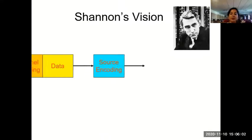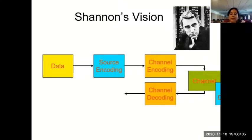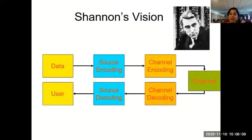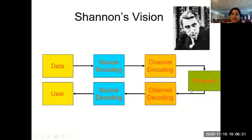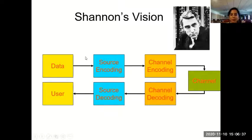Shannon's vision was that data should pass through a source encoder, then a channel encoder, then through the channel. On the reverse side, all those units above are the transmitting end, and after the channel, the same units in opposite order are at the receiving side. Data to be sent is first passed to a source encoder, whose job is to convert the output of the information source from English-like language to binary format efficiently.